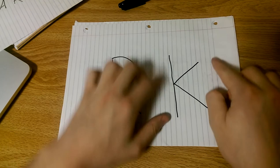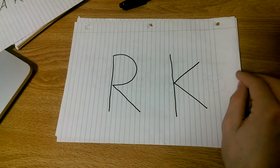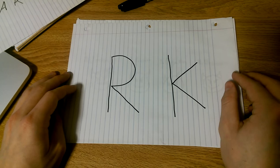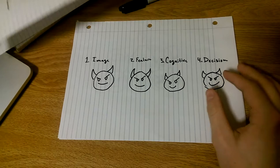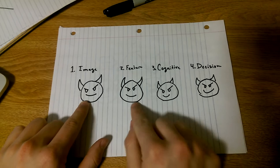So in his paper Pandemonium: A Paradigm for Learning, Oliver Selfridge described a computational model that could do this sort of analysis. He describes groups of demons that communicate in layers to one another. These demons are grouped into four stages: the image demon, the feature demons, the cognitive demons, and the decision demon.